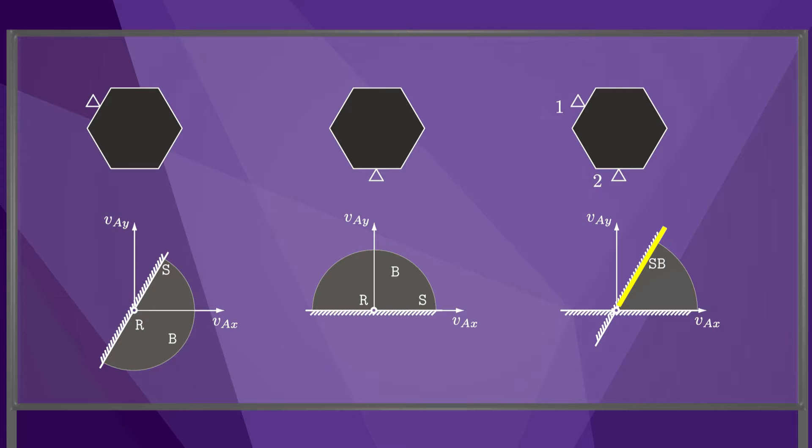Twists along the top bounding ray are labeled SB because these twists cause sliding along contact 1 and breaking at contact 2. Twists along the bottom bounding ray are labeled BS because they cause breaking at contact 1 and sliding at contact 2.